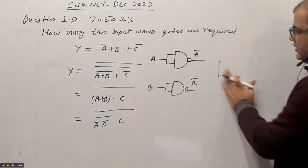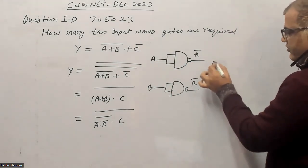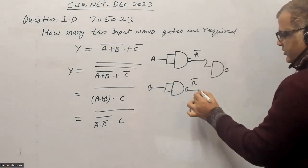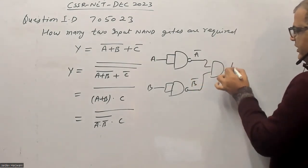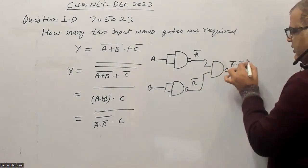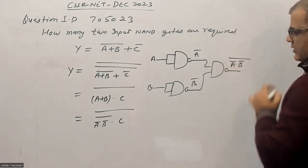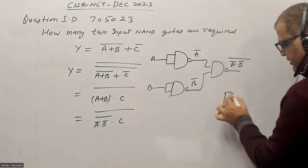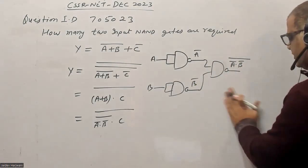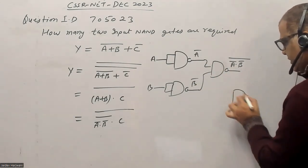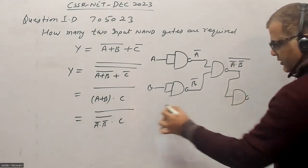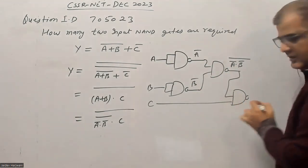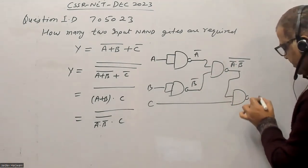And you have to also make the product of these two inputs which will give you A bar dot B bar dot C bar, and you have C here. And you finally have to make the expression, so for that you take one more NAND gate.